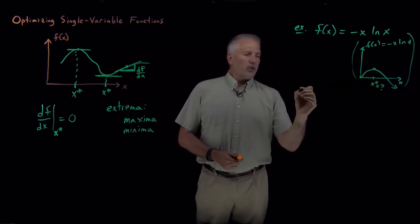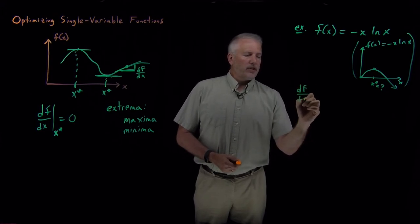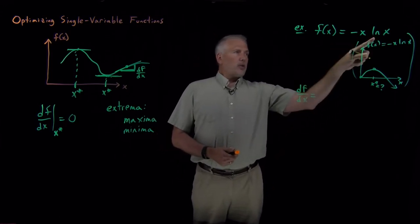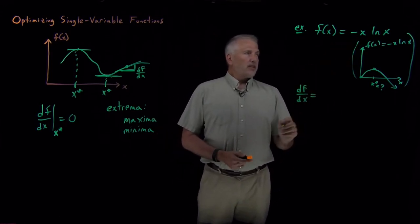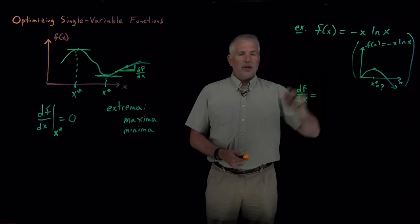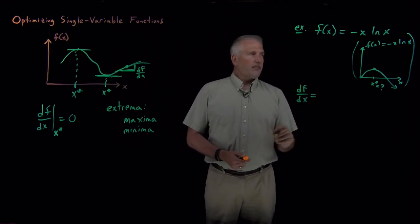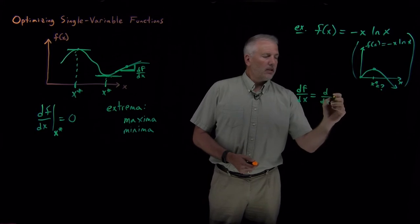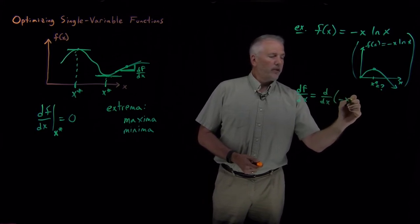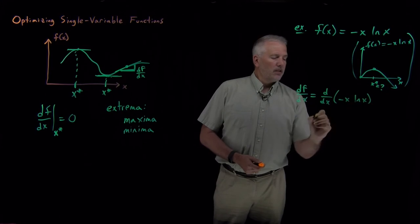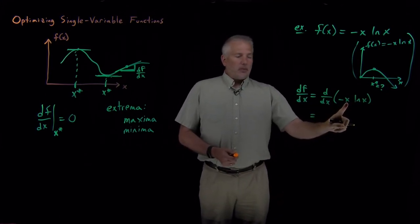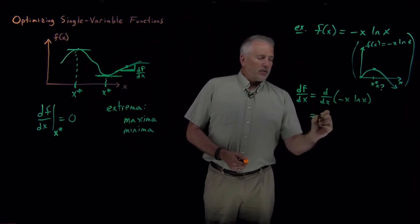We're looking for the place where the derivative is equal to zero. So we need to be able to take the derivative of the function, derivative of minus x log x. So x shows up in here twice, so we're going to need to use the product rule. Let's go ahead and write this out very explicitly the first time. So I want the derivative of minus x log x. I can take the derivative of the first term in which x appears. The derivative of x, of course, is one.